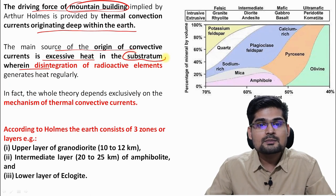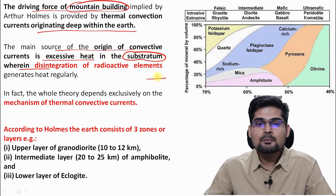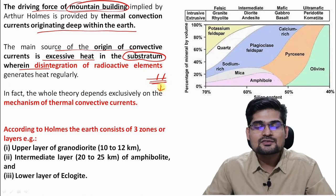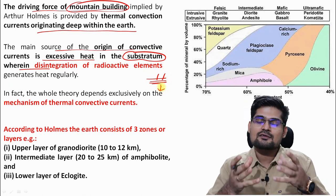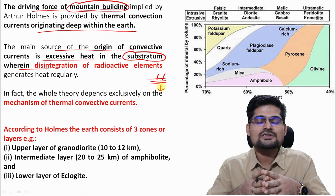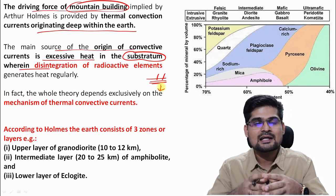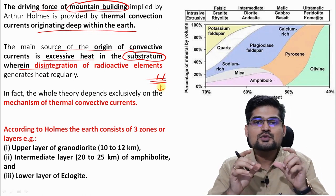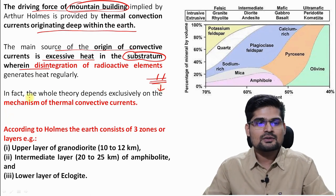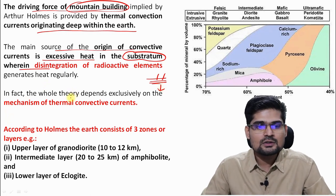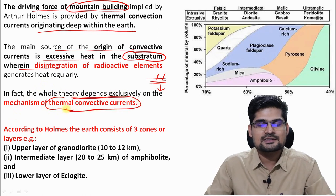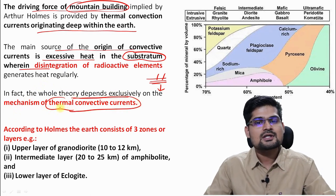The substratum is below the strata of the crust — that is, in the asthenosphere, which is partially molten, as we have already learned in the internal structure. If you have not watched the videos on internal structure and isostasy, I would suggest you watch that video for more clarity. The whole theory depends exclusively on the mechanism of thermal convective currents.